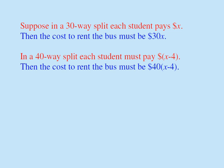According to the question, the cost to rent the bus does not change. So that tells us that 30X must be equal to 40 times (X minus 4).